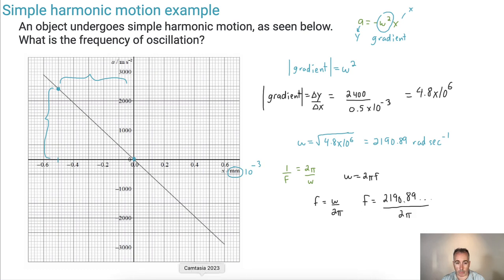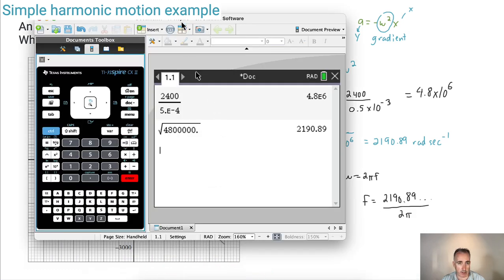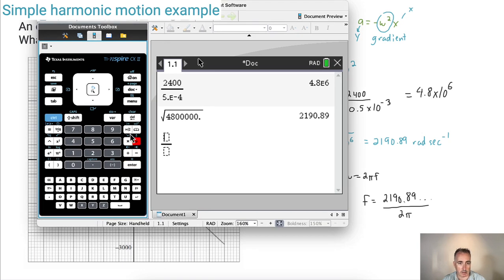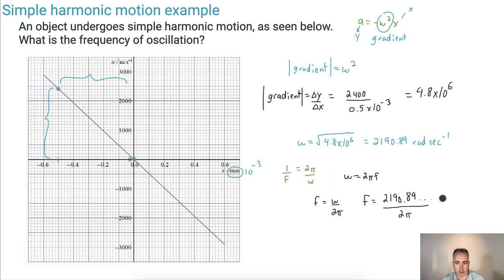It's always good to use all the decimals you can with your calculator. So I'll take this answer divided by 2 times π. And I get 348.691.